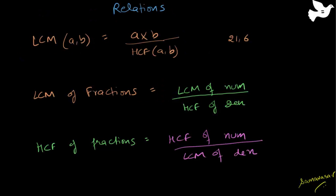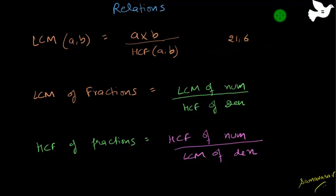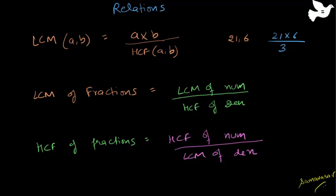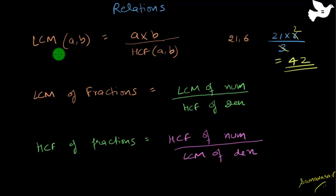Here are certain relations. LCM of A and B = (A × B) ÷ HCF of A and B. For example, finding the LCM of 21 and 6: I have 21 × 6 ÷ HCF. Since 21 = 7 × 3 and 6 = 3 × 2, there is just one common factor which is 3, so HCF = 3. Solving: (21 × 6) ÷ 3 = 42. The LCM is 42. If both numbers have no common factor (HCF = 1), the LCM is simply the product of the two numbers.